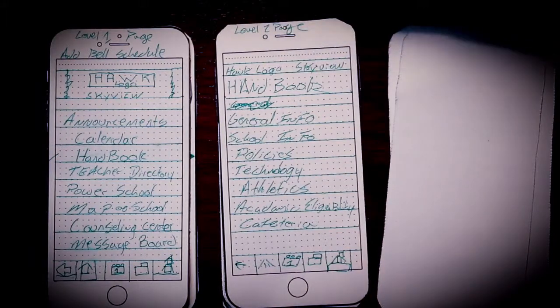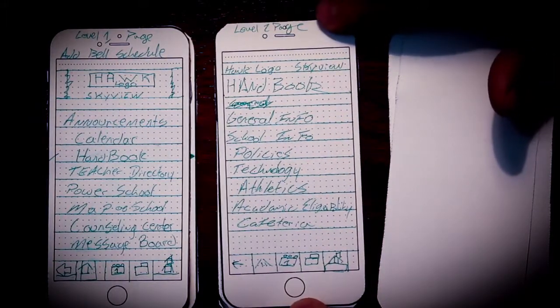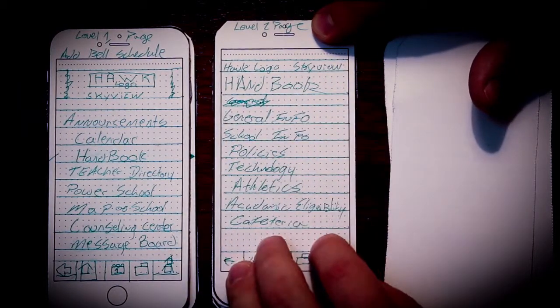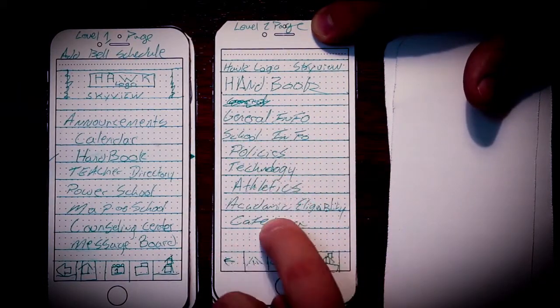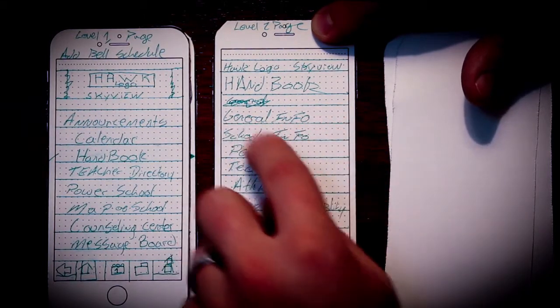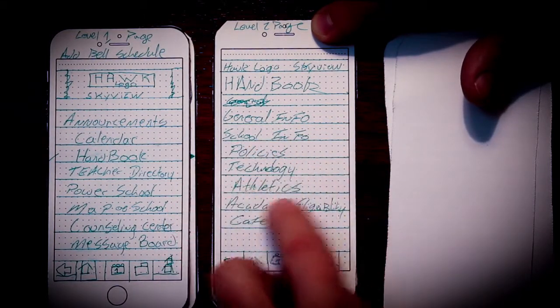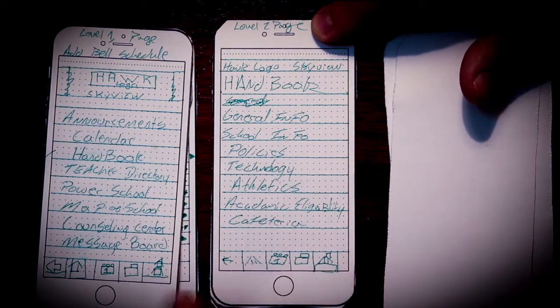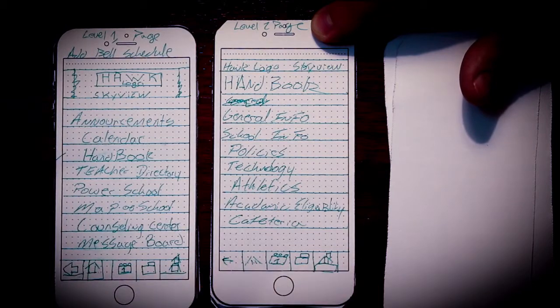Then inside of this is now a second level page for the handbook. We still have the Hawks logo across the top, Skyview. So these are buttons that will take you out to additional pages, not merely drop-downs. So we have general info, school info, policies, technology, athletics, academic eligibility, cafeteria, and then the same four buttons at the bottom as well.